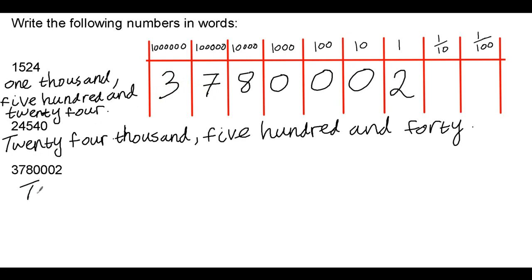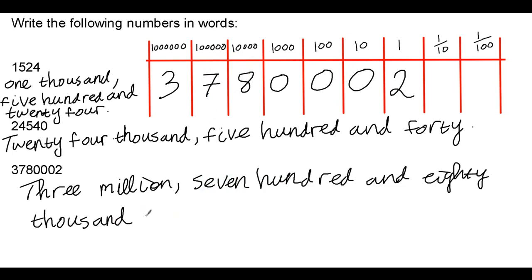So, here, I actually have 3,000,000, 780,000. 700,000 and 80,000 make 780,000. And, finally, I have 2 in the units. So, I would have 3,780,000 and 2.